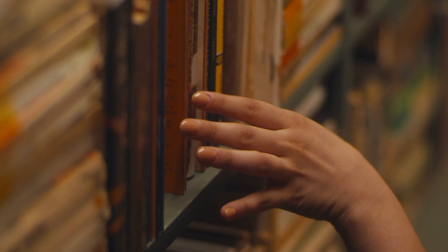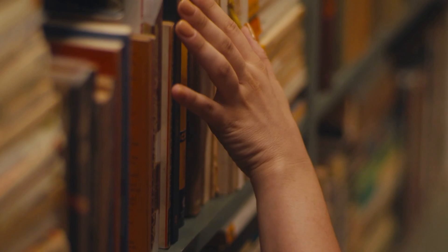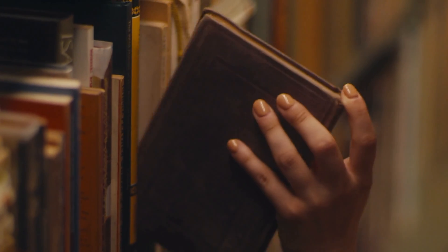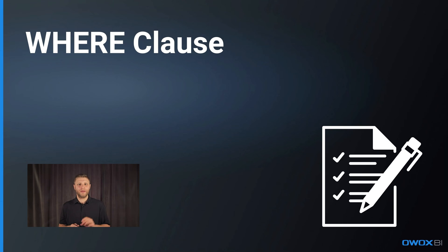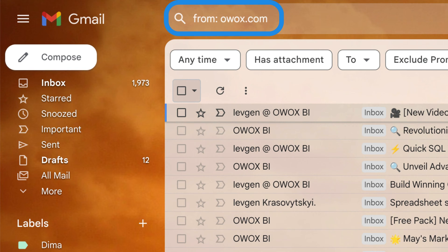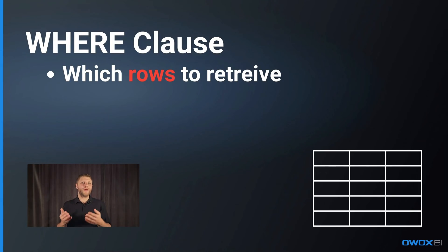Number two: FROM. This statement specifies from which table in the database you want to retrieve the data. If SELECT tells you what to retrieve, FROM tells you where to find it. Number three: the WHERE clause. This command allows you to filter the data based on certain criteria — it's like asking for a specific dish that uses only certain ingredients. SELECT helps you choose the columns; WHERE is used to filter the rows that meet your criteria.